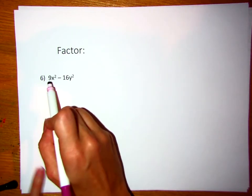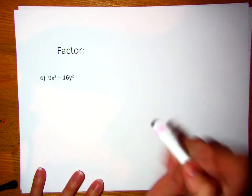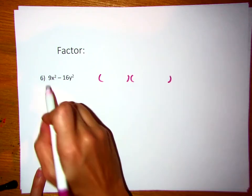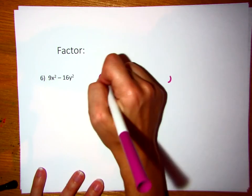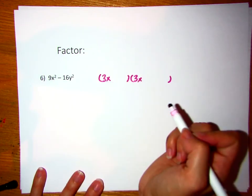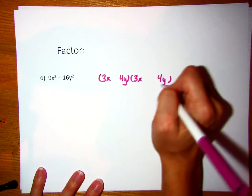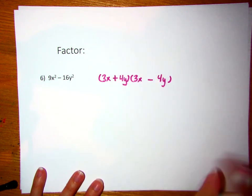In this one, do we see something that we can take the square root of perfectly for both of them? Yes. Is there a subtraction sign in the middle? Yes. So we open two parentheses. What times itself gives me 9x squared? 3x times 3x. What times itself gives me 16y squared? 4y times 4y. Remember to get rid of that middle term so that all I have left is two terms, one has to be positive, one has to be negative.